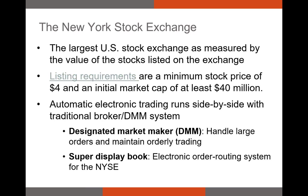Now let's talk about the exchanges where stocks typically trade in the secondary market. This topic is called market microstructure, which refers to the structure of the markets and how securities trade in those markets. Keep in mind that market microstructure can change rapidly — the terminology has changed a lot even since 2016. The first market is the New York Stock Exchange, or NYSE, one of the oldest stock exchanges in the US, which historically has had a trading floor. To be listed on the NYSE, a firm has to maintain a share price of at least $2 to $3 and have a market cap of at least $40 million.